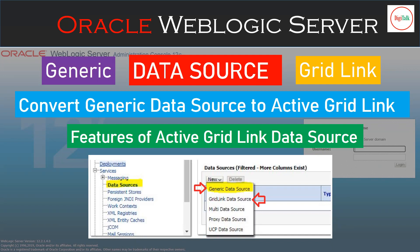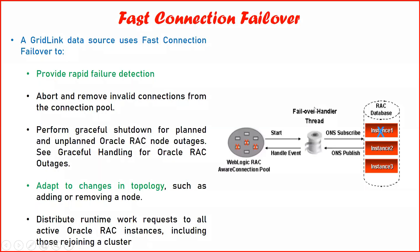Specific to this video I will cover two things: the three important parameters of your grid link data source — that means the three important benefits — and if you want to convert a generic data source to an actively linked data source, what is the process for that. This is one of the critical activities most often required in professional environments where data sources are created as generic but later need to be converted to active grid link data sources.